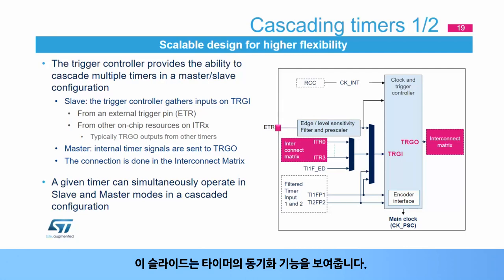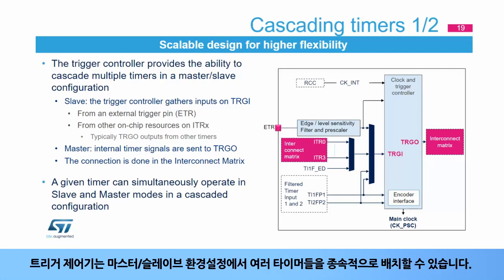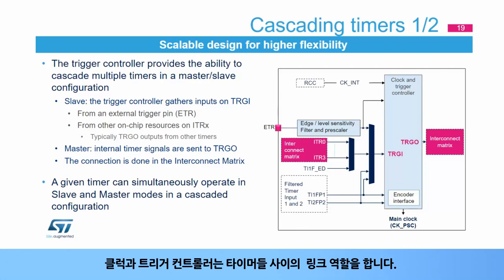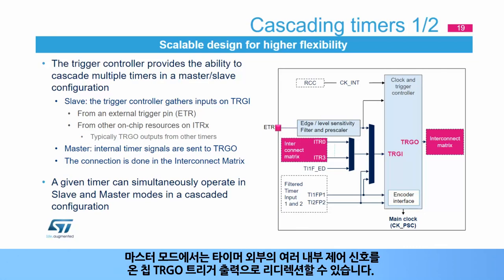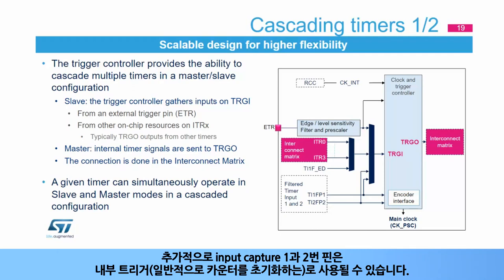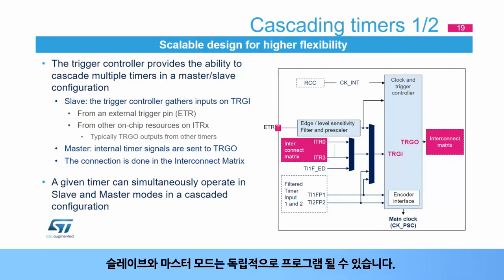The trigger controller can cascade multiple timers in a master-slave configuration. A timer can control one or more timers as master, or be controlled by another timer as slave. The clock and trigger controller links the timers. In master mode, it can redirect internal control signals to an on-chip TRGO trigger output. In slave mode, it gathers inputs on the TRGI, the main trigger input coming from the external trigger pin ETR or from one of the four internal trigger inputs ITR0 to ITR3. Additionally, input capture 1 and 2 pins can also be used as internal triggers, typically to reset the counter. Slave and master modes can be programmed independently.